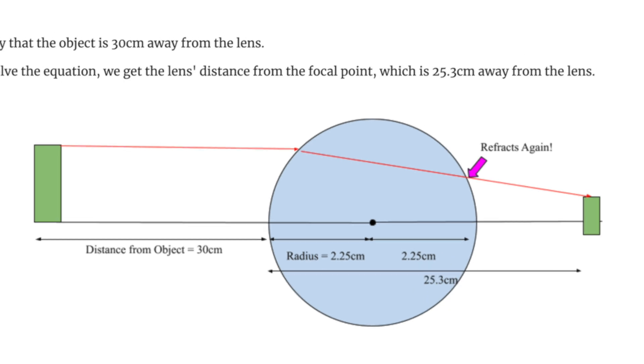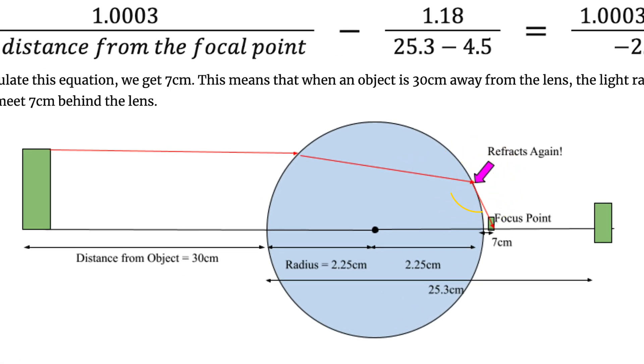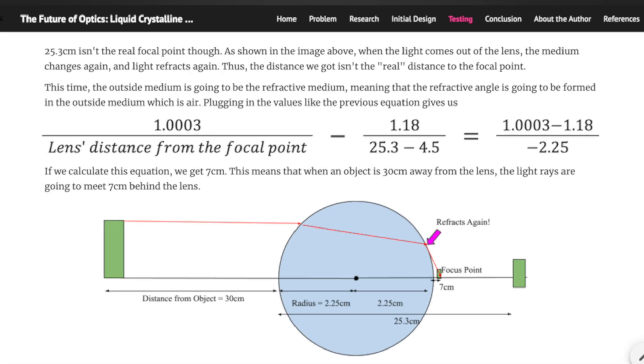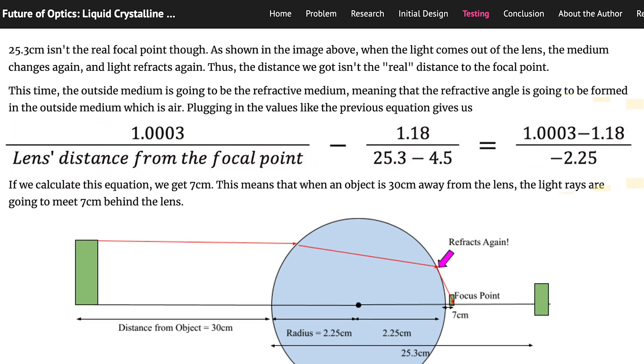25.3cm isn't the real focal point though. As shown in the image above, when the light comes out of the lens, the medium changes again and light refracts again. Thus, the distance we got isn't the real distance to the focal point. This time, the outside medium is going to be the refractive medium, meaning that the refractive angle is going to be formed in the outside medium, which is air. Plugging in the values like the previous equation gives us 1.0003 divided by the lens's distance from the focal point, subtracted by 1.18 divided by 25.3 subtracted by 4.5 equals 1.0003 subtracted by 1.18 divided by negative 2.25. If we calculate this equation, we get 7cm.